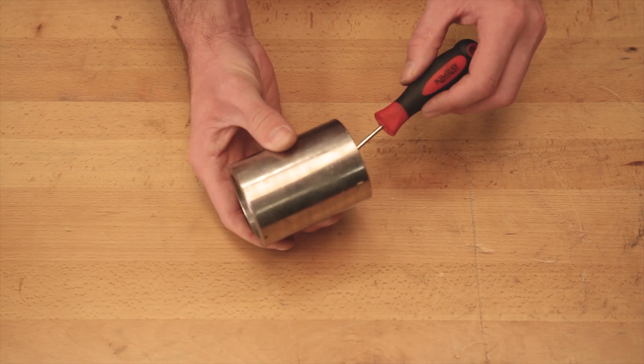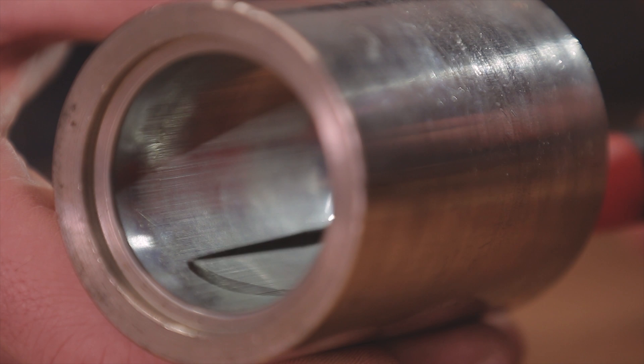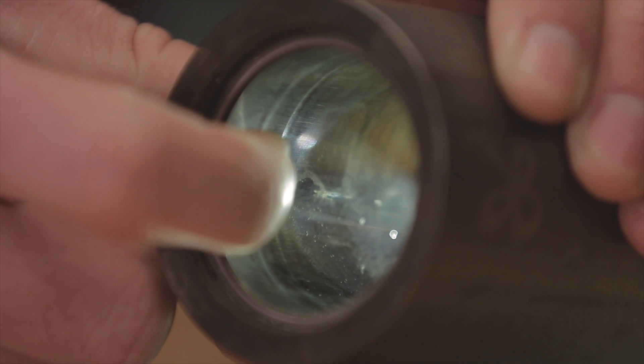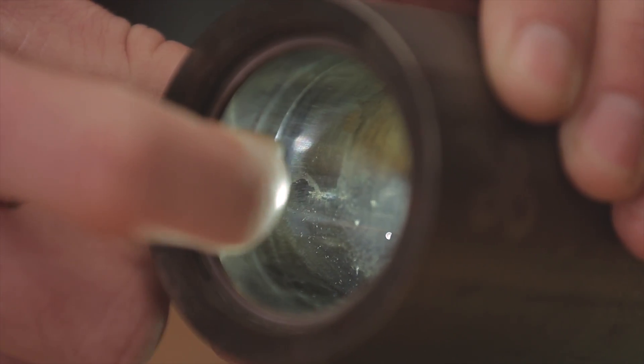Now you can check your cylinders for any scoring. If you can feel the scoring on the inside of the cylinder with your fingernail, it'll need to be replaced. The cylinder will also need to be replaced if you can feel any ripples at the end of the stroke area.